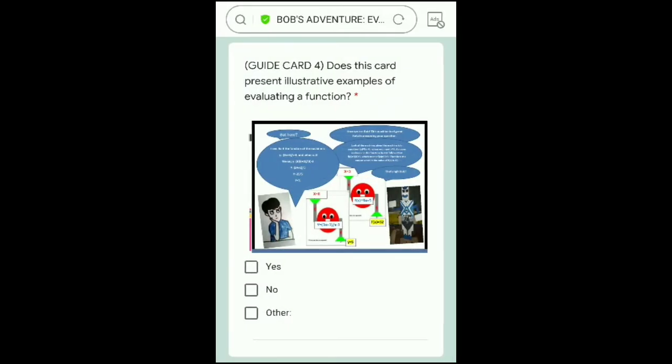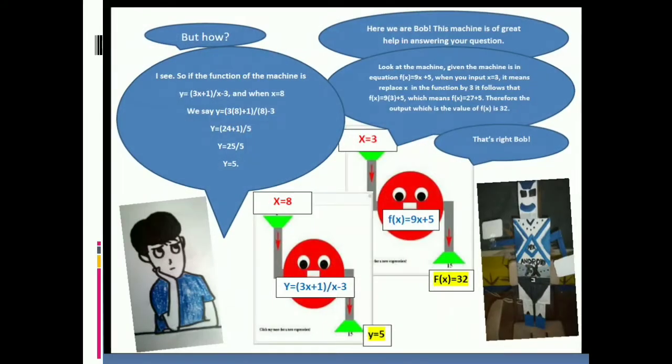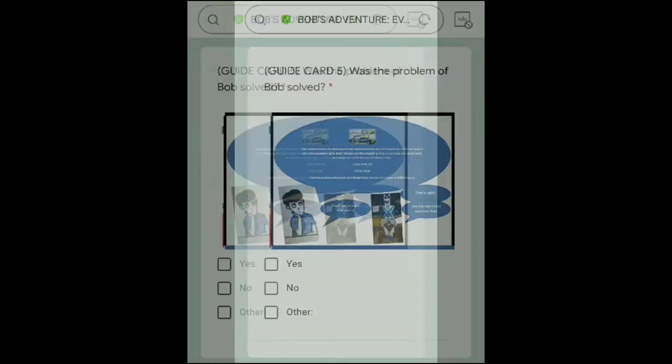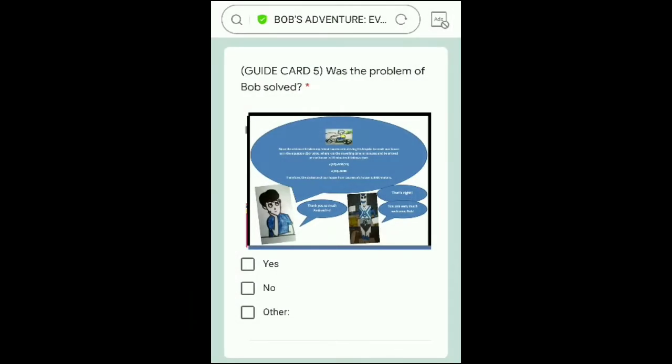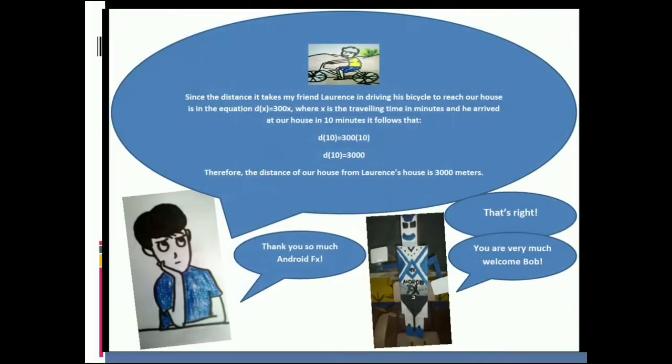In this card, illustrative examples of evaluating functions are being presented. Guide Card 5 contains solutions of Bob's problem.